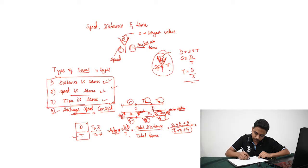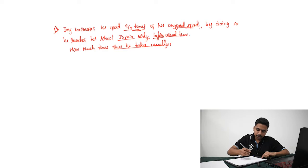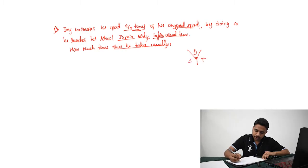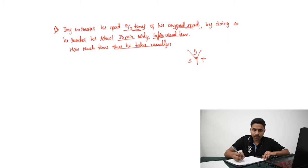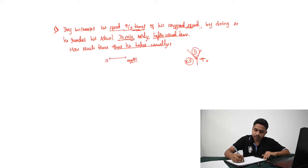Coming to the main three types of problems — Problem number one: a boy increases his speed 9 by 5 times his original speed. By doing so, he reaches school 30 minutes early. How much time does it usually take? Here we need to identify what quantity remains the same. The speed is changed, the time changes since he arrives 30 minutes early, but the distance between school and house remains constant.